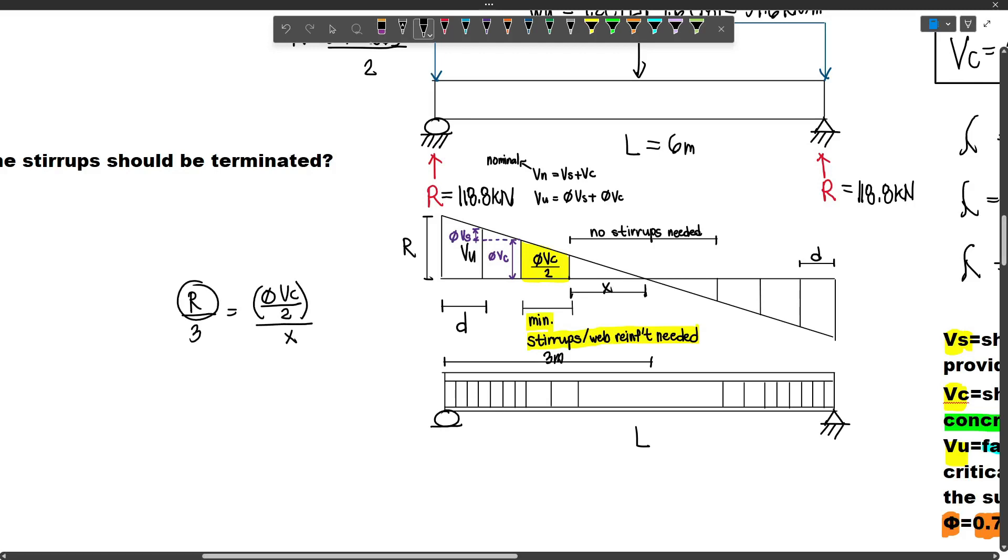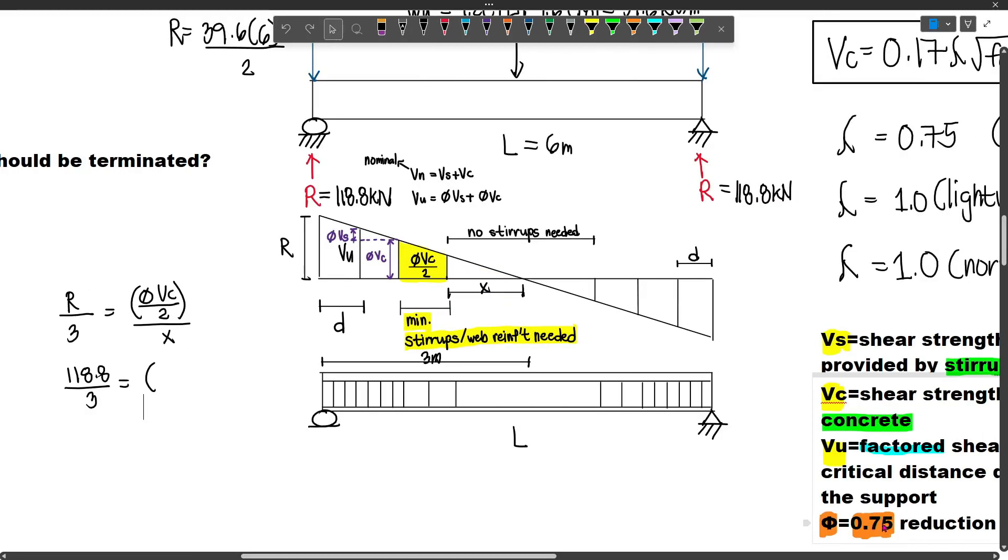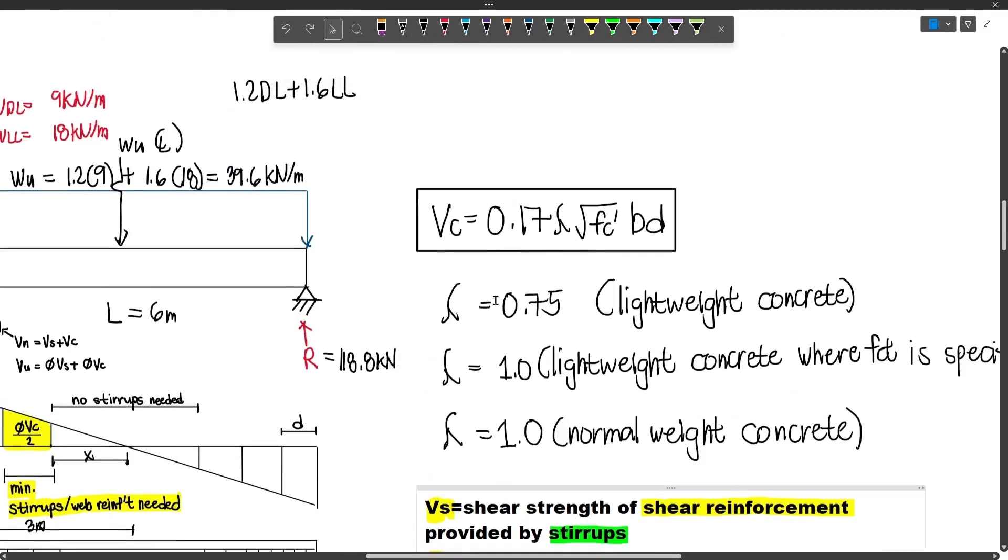R is 118.8, so 118.8 over 3 equals phi VC over 2 is to X. We need to find X. Now, what is R? R has been solved, it's 118.8. So 118.8 over 3 equals phi VC. Phi for shear is 0.75. How about VC, what's the formula? VC uses this formula: 0.17 lambda square root of fc' times bd.